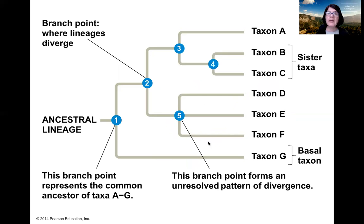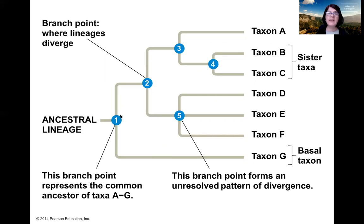This tree could also be pointing upward if we rotate it 90 degrees counterclockwise. The numbers are the branch points, and the branch points are the recent common ancestors — the points of divergence, the start of a speciation event. Number one is the common ancestor for all of the taxa. Taxa A through G have one common ancestor: number one. A speciation event led to the formation of taxon G, and number two is the common ancestor of A through F.